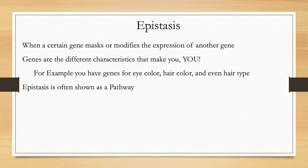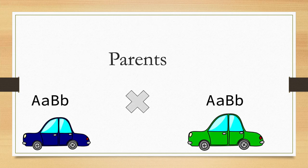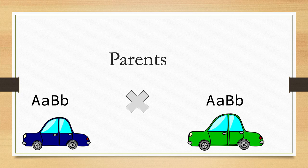Epistasis is often shown as a pathway. The epistasis pathway that I will be using as an example involves two parents, which are cars.